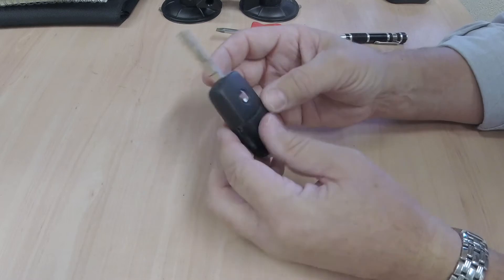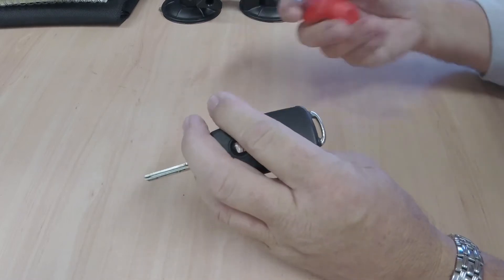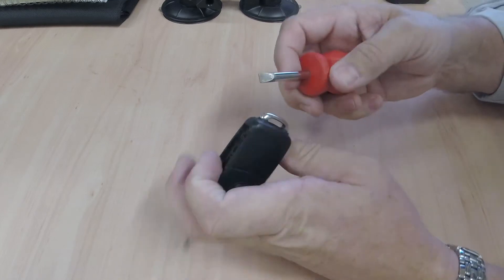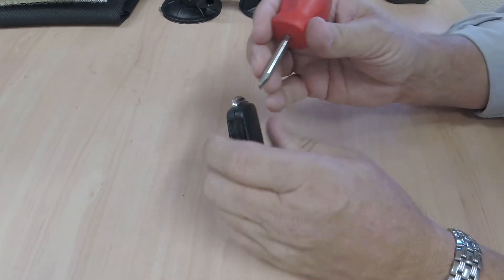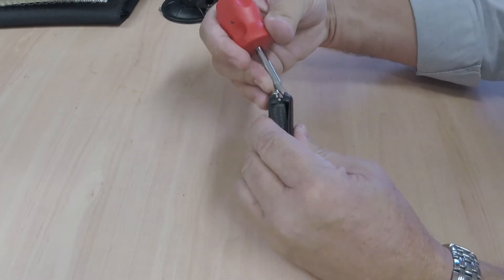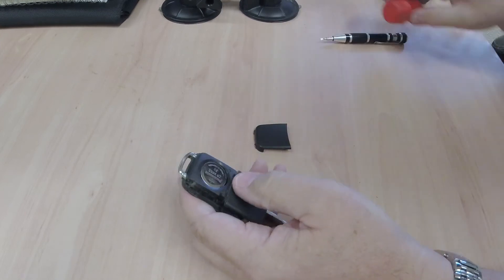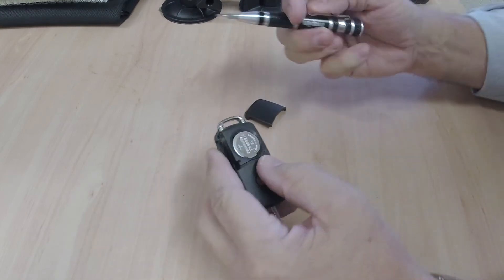Don't force a screwdriver in because you'll end up putting it through your hand. Just tuck it under the little plastic and lever up, and then it comes off.